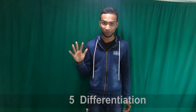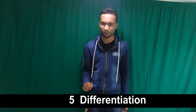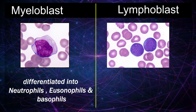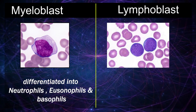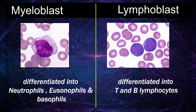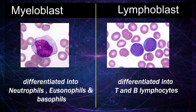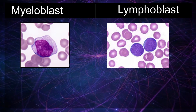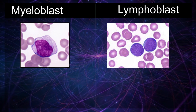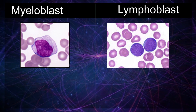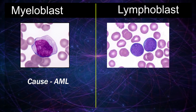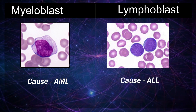Difference number five — differentiation: myeloblast cells usually differentiate into neutrophils, eosinophils, and basophils, while lymphoblasts can be differentiated into T and B lymphocytes. Difference number six — pathology: the abnormal proliferation of myeloblasts can cause acute myeloblastic leukemia, while the abnormal proliferation of lymphoblasts can cause acute lymphoblastic leukemia.